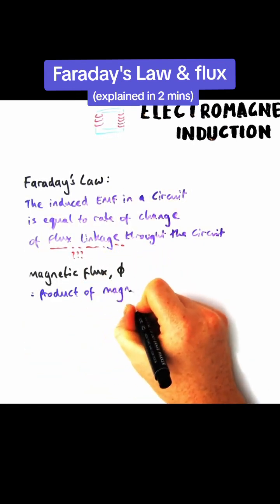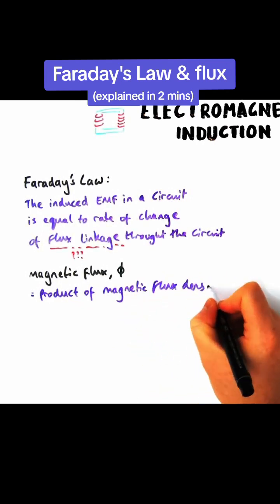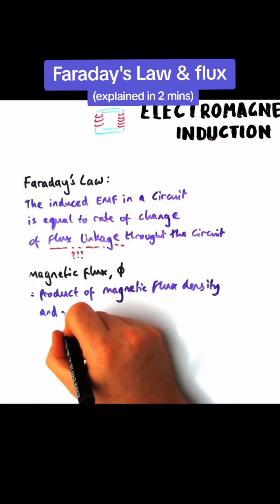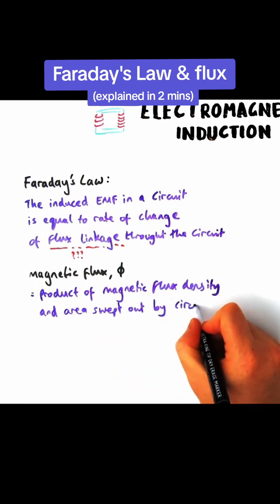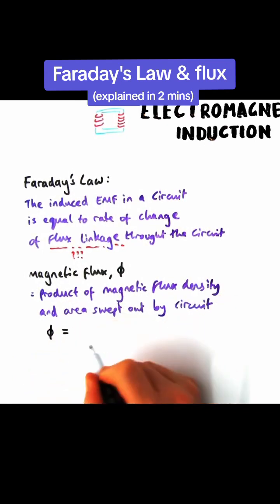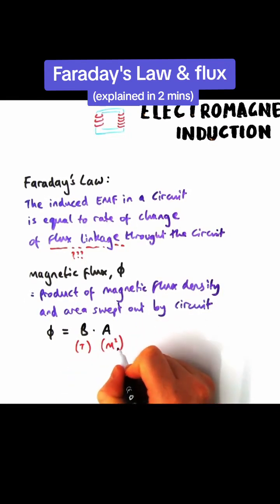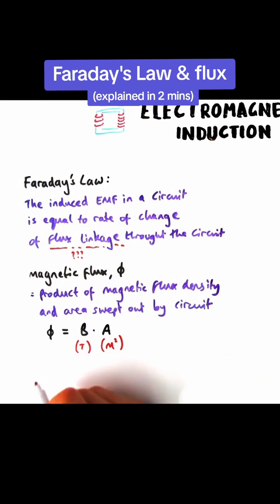So magnetic flux, which uses the symbol phi, is the product of magnetic flux density by the area swept out by the circuit, or by the coil of wire which you're moving through it. Flux density, which has the symbol B, is measured in Tesla. Area is in meters squared. Magnetic flux has the unit Weber.